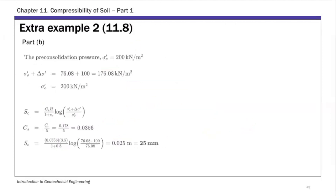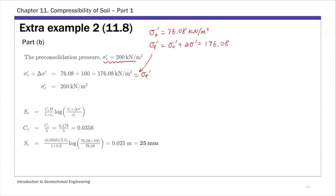For part B, same soil profile and same surcharge. The difference this time is the pre-consolidation pressure: sigma c prime is 200 kN per meter squared. Comparing the initial effective stress sigma₀ prime of 76.08 kPa and sigma f prime — which equals sigma₀ prime plus delta sigma prime — giving 176.08 kPa, against the pre-consolidation pressure: sigma₀ prime is smaller than sigma f prime, and both are smaller than sigma c prime of 200.